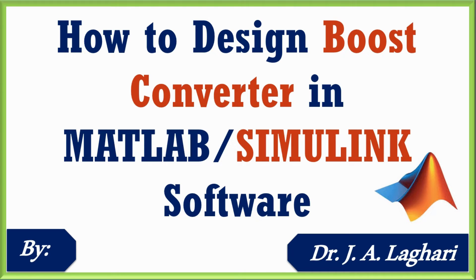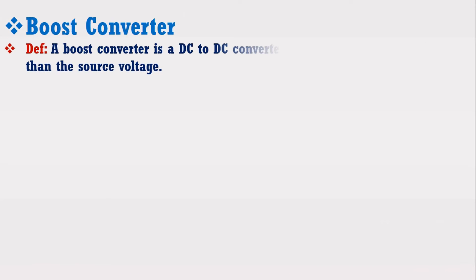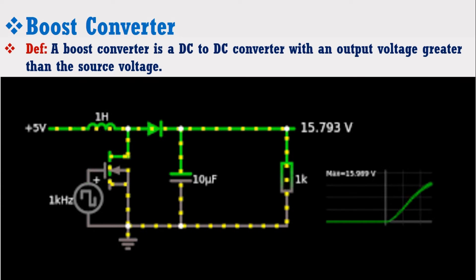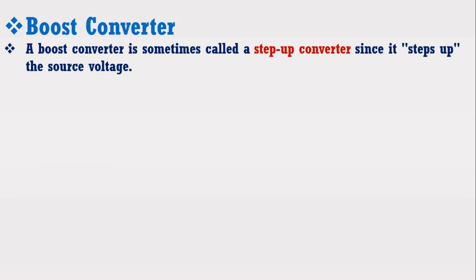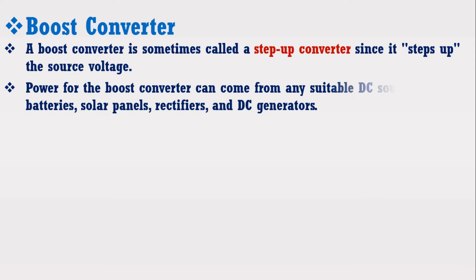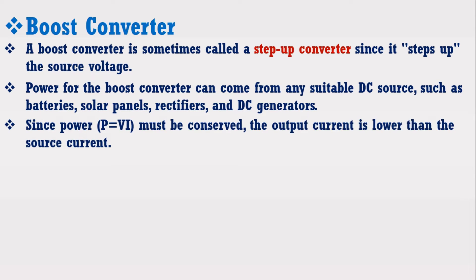A boost converter is a DC to DC converter with an output voltage greater than the source voltage or input voltage, as shown here in this animated figure. Due to this reason, a boost converter is sometimes called a step-up converter, since it steps up the source voltage. The power for the boost converter can come from any suitable DC source such as batteries, solar panels, rectifiers, and DC generators. Since power P equals V times I must be conserved, the output current is lower than the source current in order to maintain the total power.